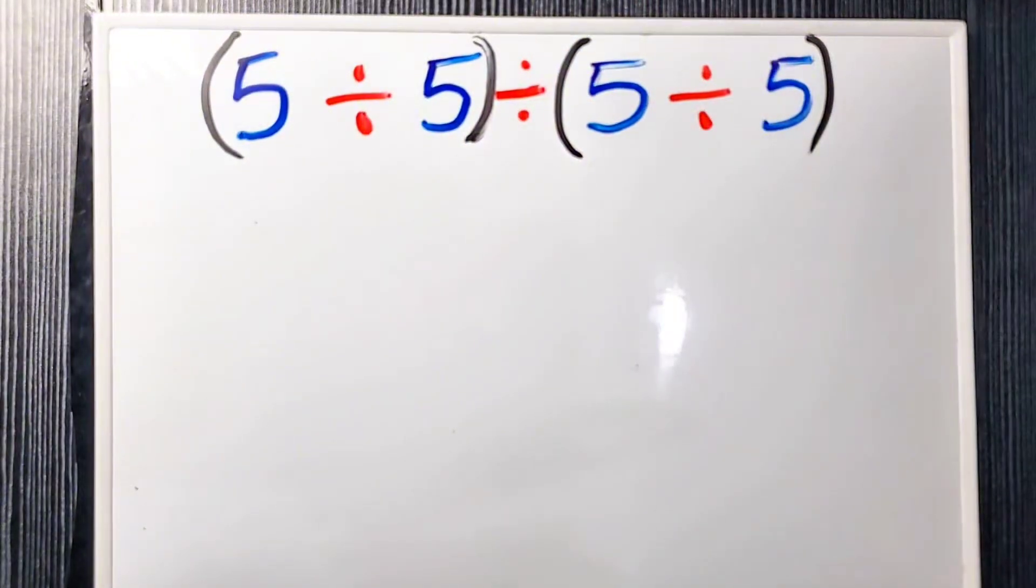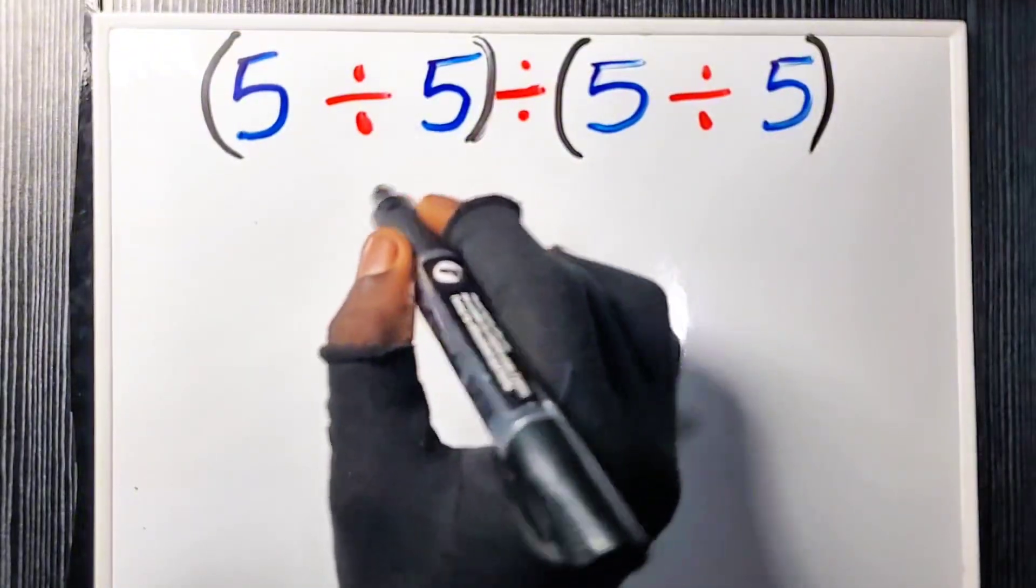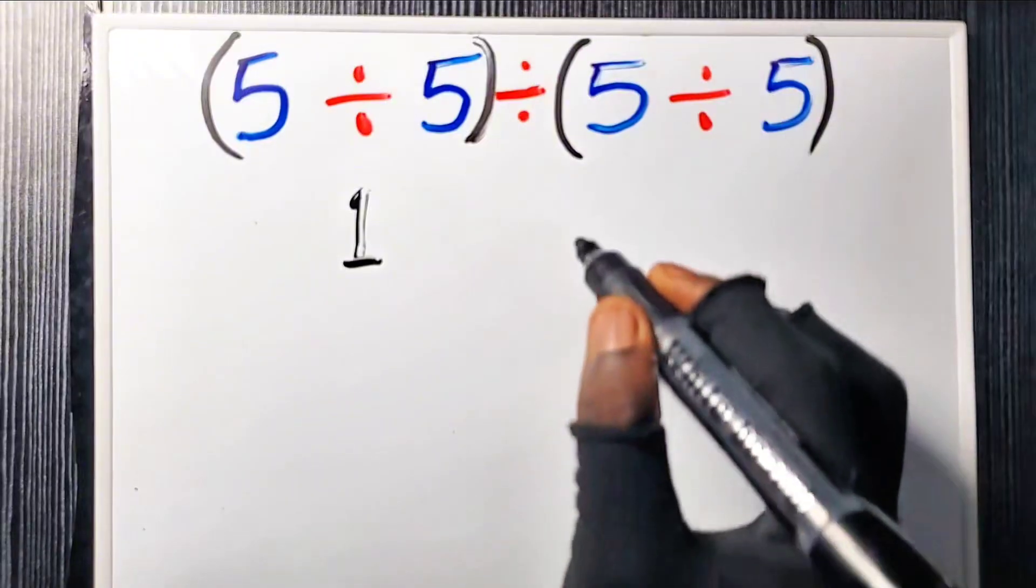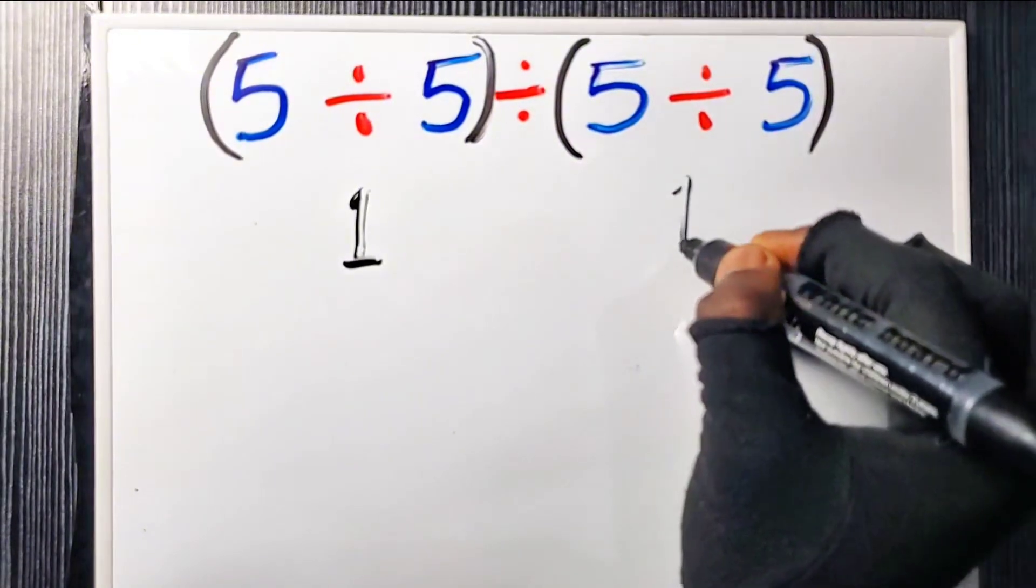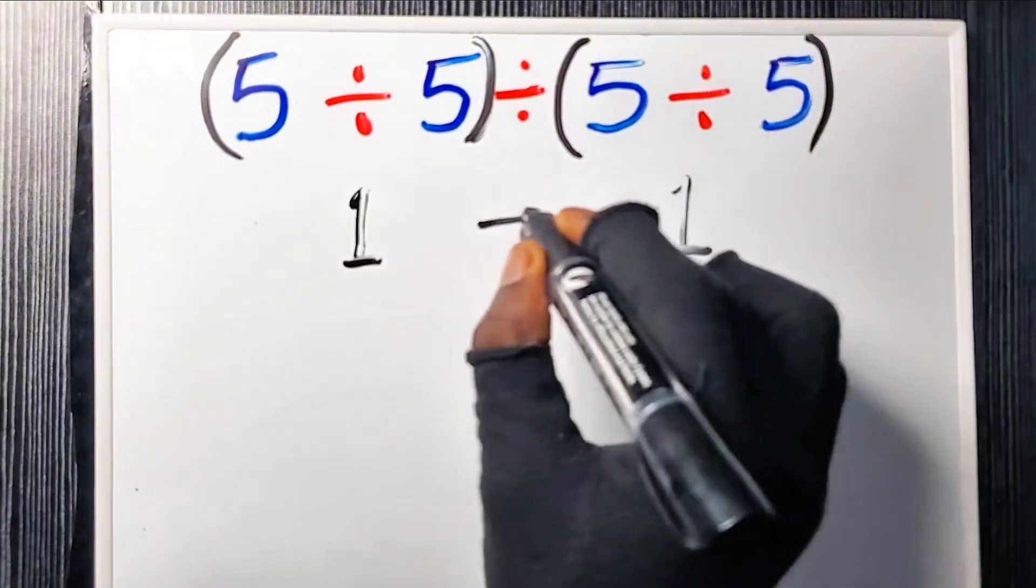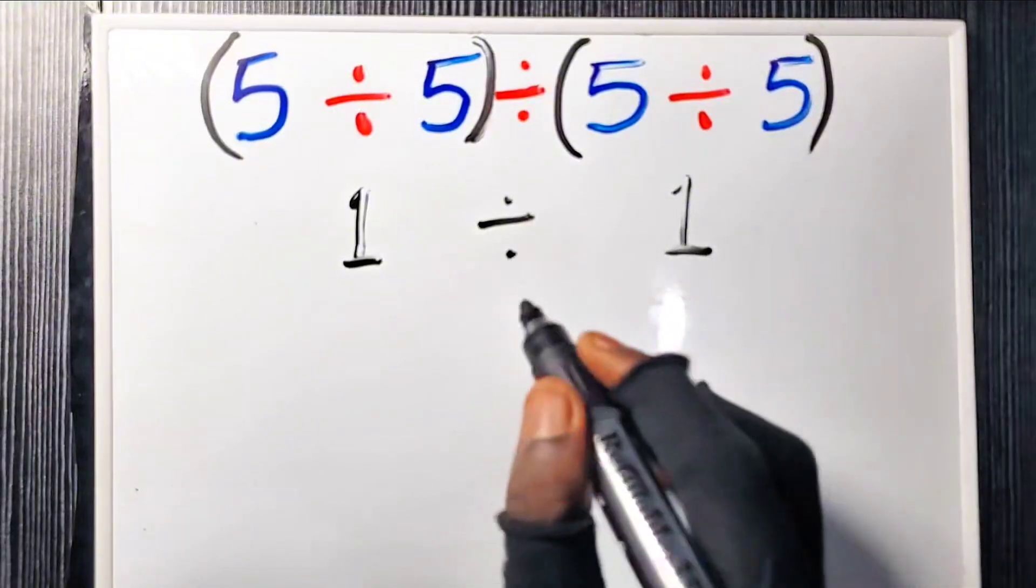You solve the first pair: five divided by five equals one. Then you solve the last pair: five divided by five also equals one. And finally you divide one divided by one, which is one.